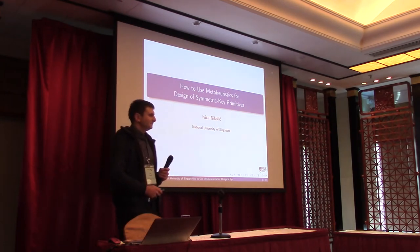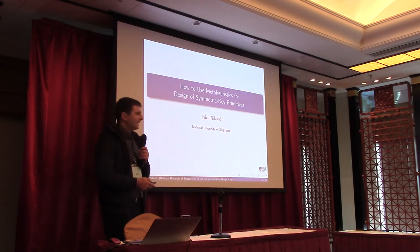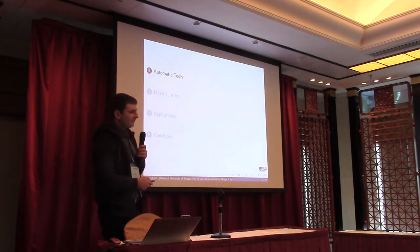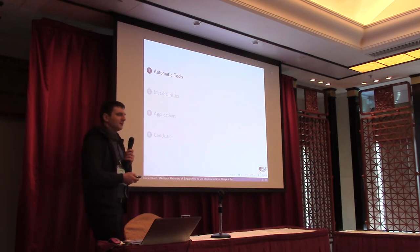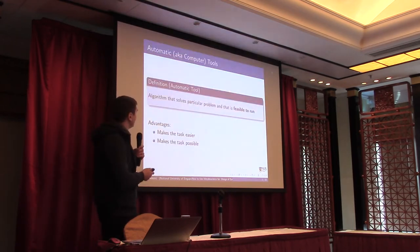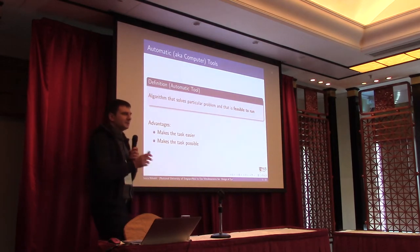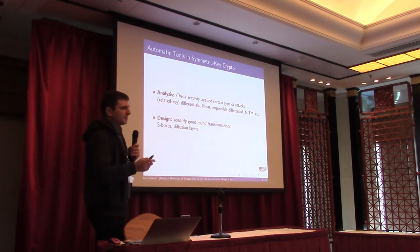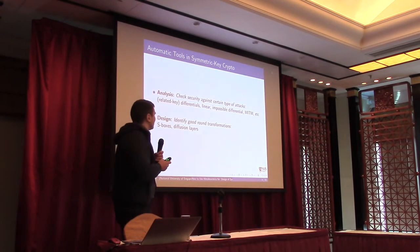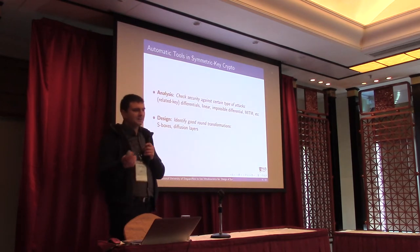Thank you for the introduction. Meta-heuristics are automatic tools. Let's take a brief look at these automatic tools and try to understand what kind of problem we are trying to solve. An automatic tool is an algorithm that solves a particular problem and is feasible to run — the emphasis is on feasible to run. In symmetric key crypto, we use various automatic tools both in analysis and in design.